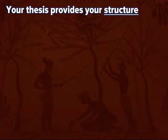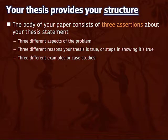Once you have your thesis, that provides your structure for the paper — the body of your paper is showing why your thesis statement is valid. Generally speaking, historians love the rule of three: three reasons why feels convincing and shows the reader this is viable. This is sometimes referred to as the three pillars. It can be three different aspects of your problem, three reasons why the thesis is true, three steps in showing it's true, or three different examples of what you're trying to say.